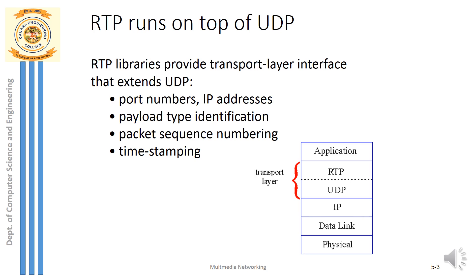RTP packets are generated once the user speaks — audio messages are converted into chunks, those chunks are encoded, and then encapsulated with an RTP header. The RTP packet runs over UDP, so a UDP datagram is generated with a UDP header added, then an IP header is added, and finally it moves to the data link and physical layers to travel over the network to reach the destination.